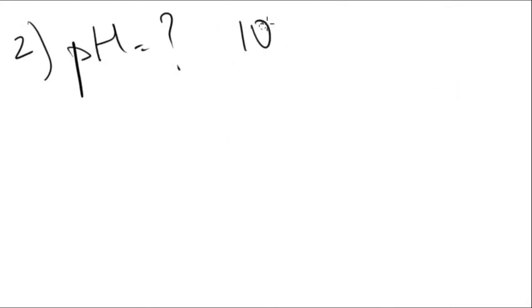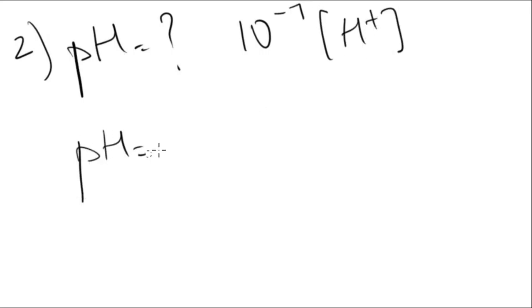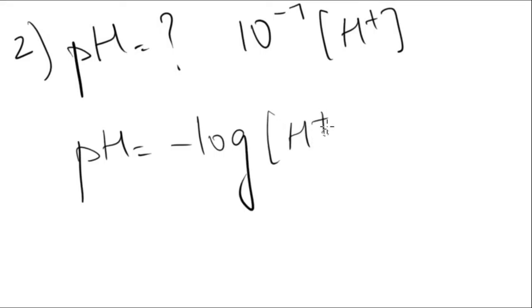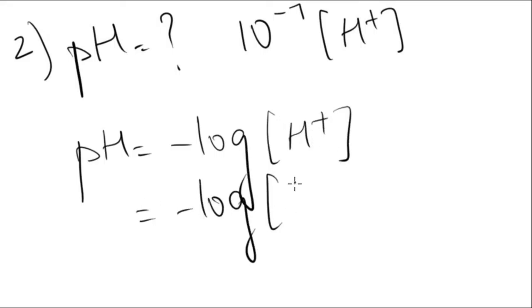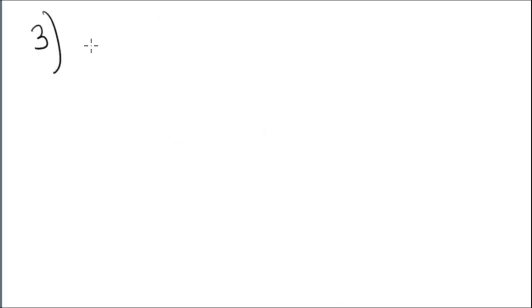Moving on to our second question, which was finding the pH when the concentration of hydrogen was given as 10 to the power minus 7. We know that pH is minus logarithm of hydrogen concentration, so our pH is equal to 7.